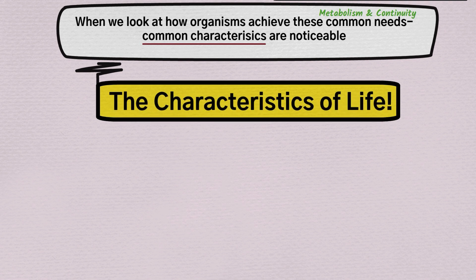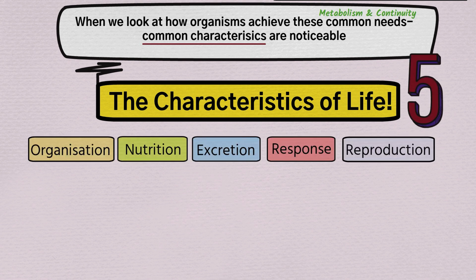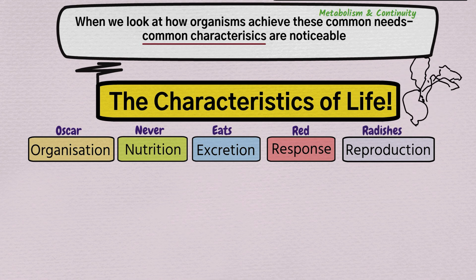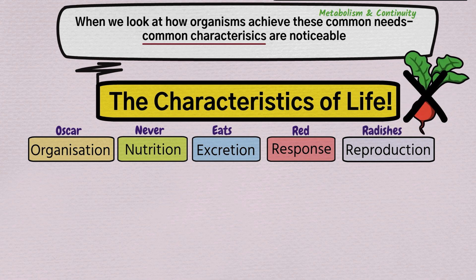There are five characteristics of life for our course that we have to know: organisation, nutrition, excretion, response, and reproduction. We use the rhyme 'Oscar never eats red radishes' to help us remember them.